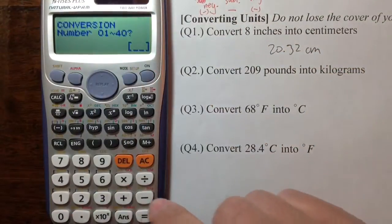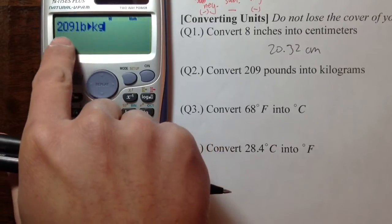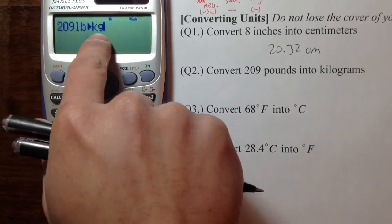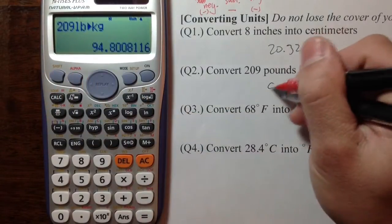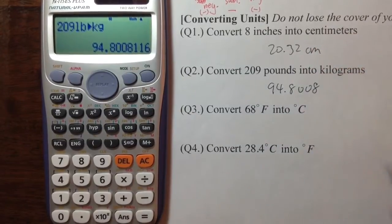So on the calculator, I just need to press 23. And it shows you that it will calculate 209 pounds, it will change that to kilograms for you. Equal, we get 94.8008 kilograms.